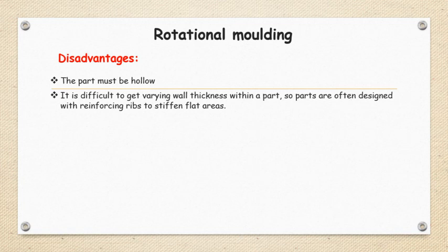These are the advantages of rotation molding. Disadvantages: the part must be hollow. Whatever you are preparing, it will be prepared hollow only. No other complex geometries you can prepare. It is difficult to get a varying wall thickness within a part.